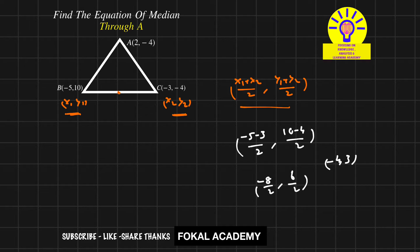So the midpoint is (-4, 3). Let's call this point D. Now by joining A and D, we have the median line which passes through point A.